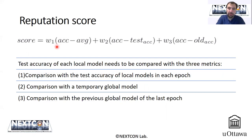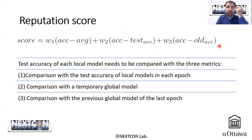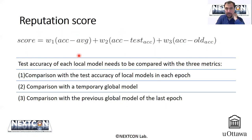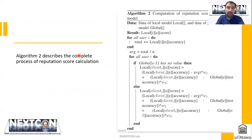Each comparison is weighted with some weights — the comparison with the temporary global model and the comparison with the previous global model in the most recent epoch are all summed up through these weights. Selecting these weights requires an empirical study. This particular work does not determine the optimal weights, but extensions of this work include an analysis of weight selection in the calculation of reputation scores.